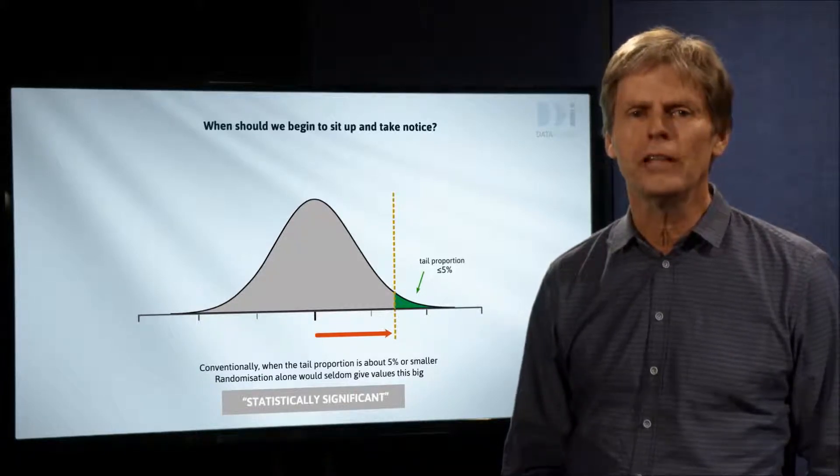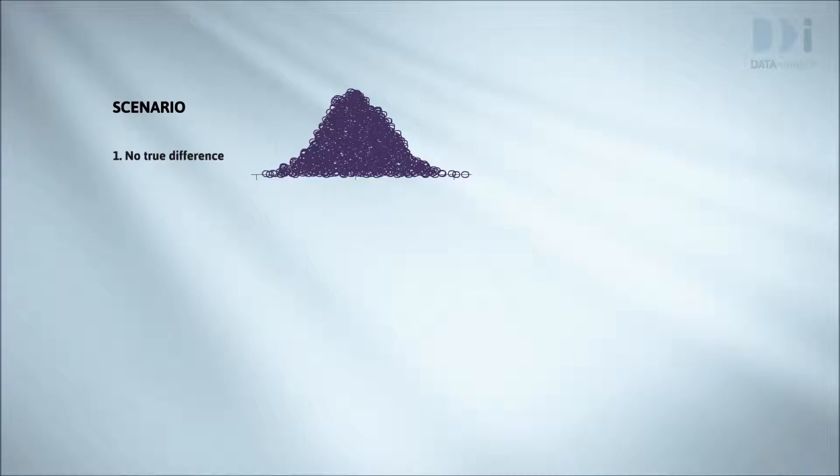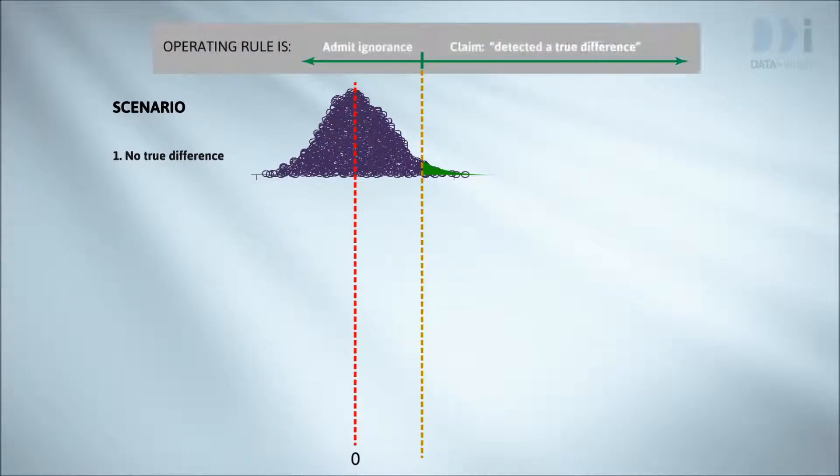We don't know what the true state of the world is. If scenario one holds so that in truth there's no difference at all, the difference we get from our data is like a random draw from the top dot plot. There's a small chance that just from the luck of the randomisation draw, our observed difference will fall to the right of the brown dashed line, and we'll make a false claim that there's a true difference.